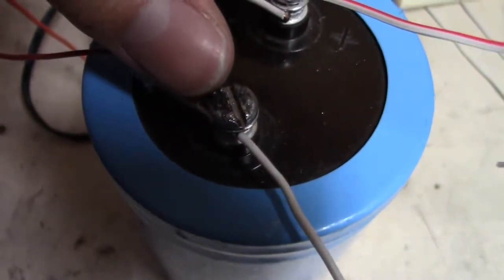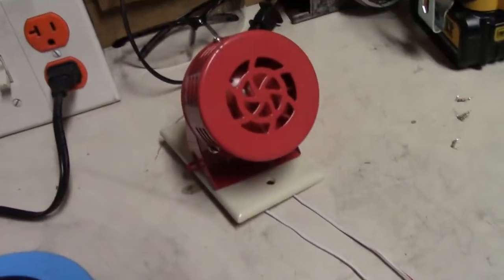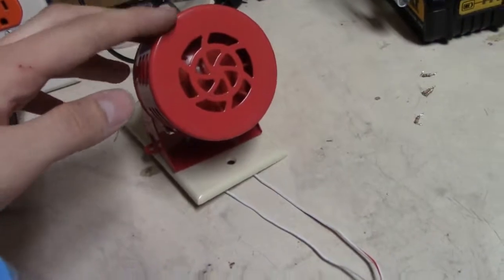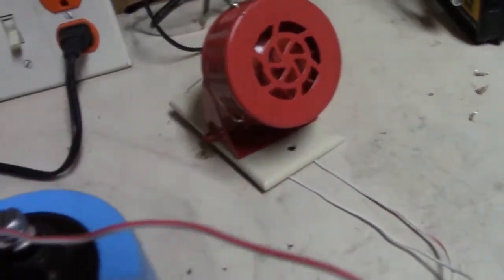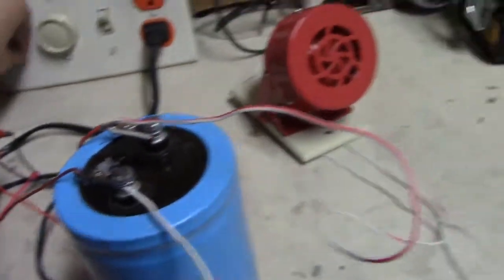As you see here, I have the positive lead going to the positive on the capacitor. Hard to see but that's a positive. This one doesn't have anything and that normally means is negative. Your positive wire, even though it doesn't really matter for this siren but some other sirens may matter, you have to go to the negative on the siren right here.